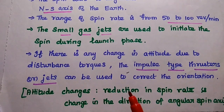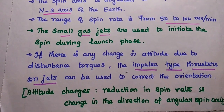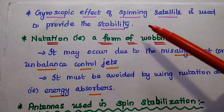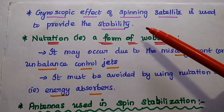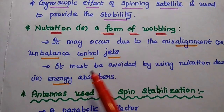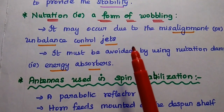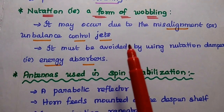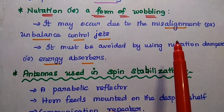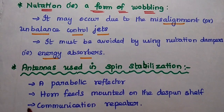An attitude change due to disturbance forces may take the form of a reduction in spin rate or changes in the direction of angular position. In spinning satellite stabilization, the gyroscopic effect is used to provide stability — meaning the ability of the spinning satellite to maintain a steady direction of rotation. Nutation, a form of wobbling (movement from side to side due to unsteadiness), may occur due to misalignment or unbalanced control jets, and must be avoided using nutation dampers or energy absorbers.